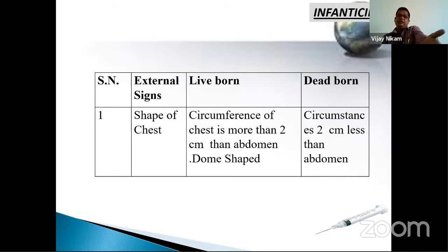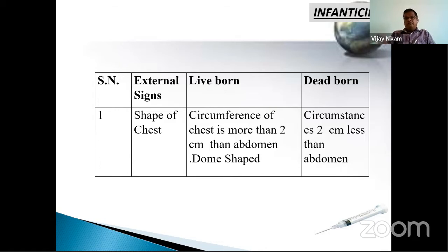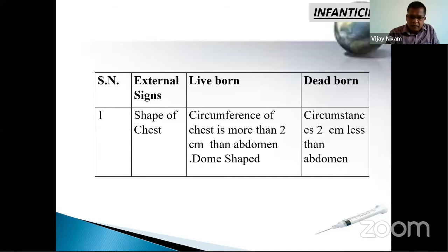Differences between live born and dead born: shape of the chest. In live born, due to inspiration of air, there is expansion of the lungs. The circumference of the chest is more than two centimetres greater than the abdomen, and the chest is dome-shaped due to expansion of the lungs. In dead born, the circumference of the chest is less than the abdomen by two centimetres — it is flat.